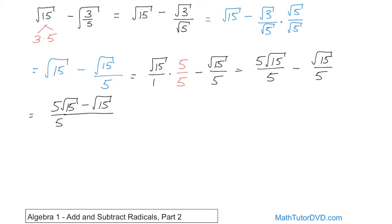The common denominator stays the same, and in the top we have like terms: square root of 15 and square root of 15. So 5 minus 1 gives us 4 times the square root of 15, and on the bottom the denominator stays 5. So the final simplified answer is 4 square root of 15 over 5.